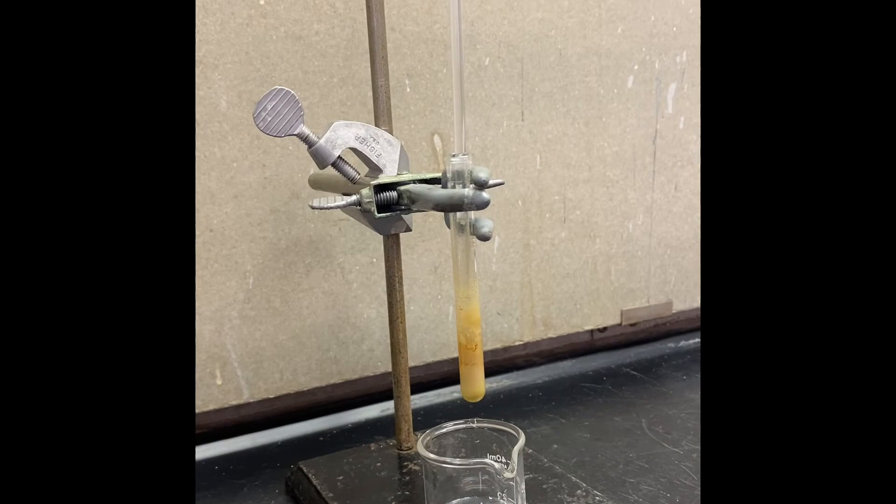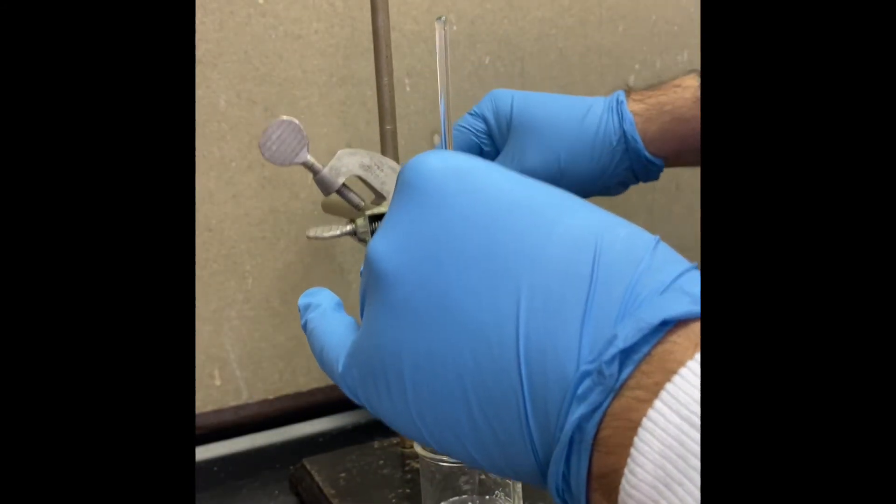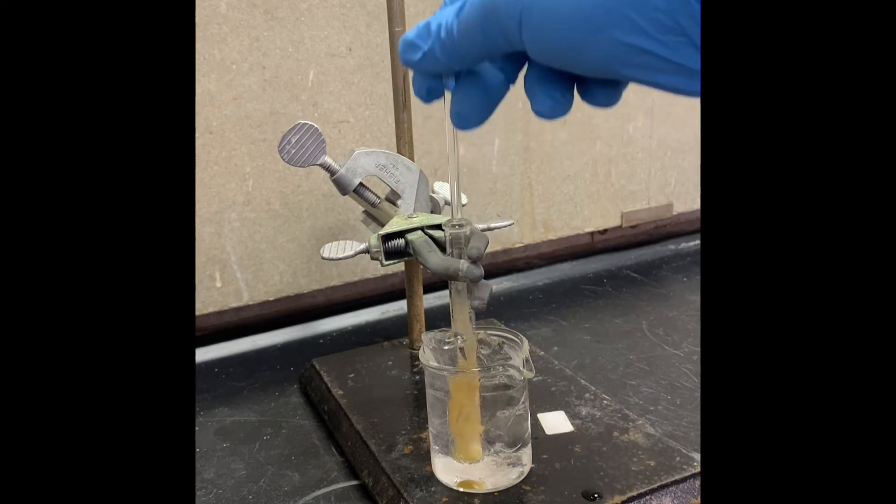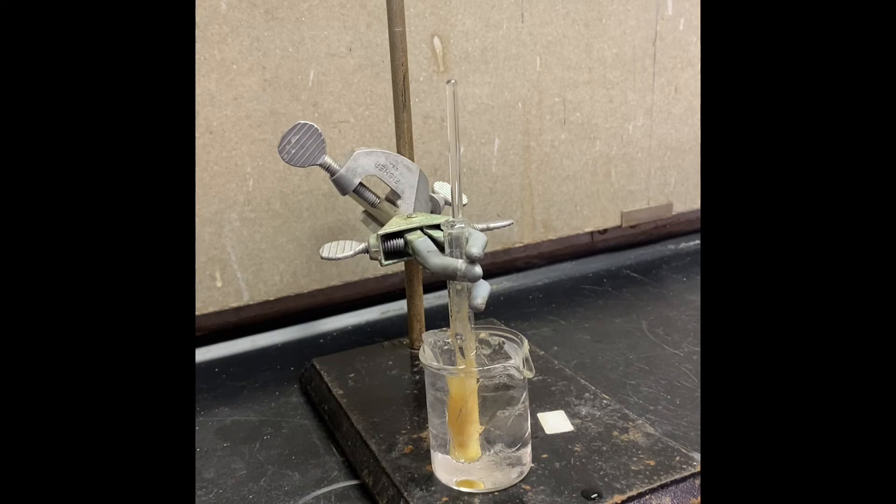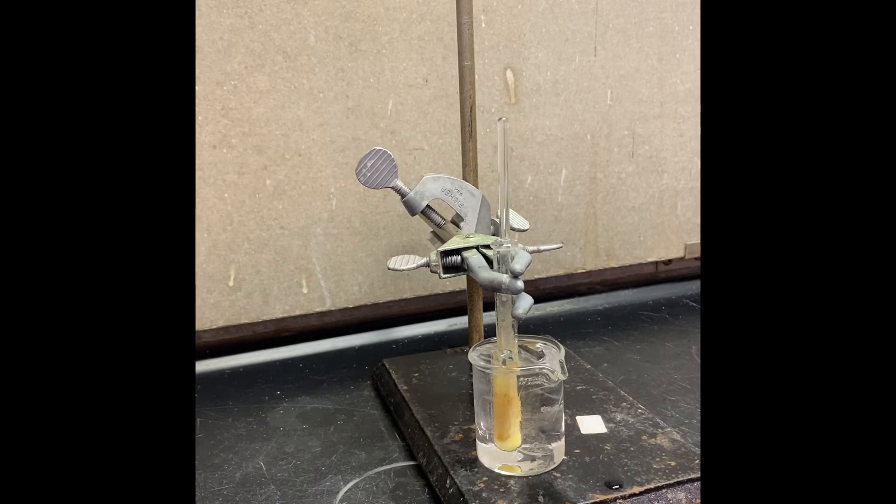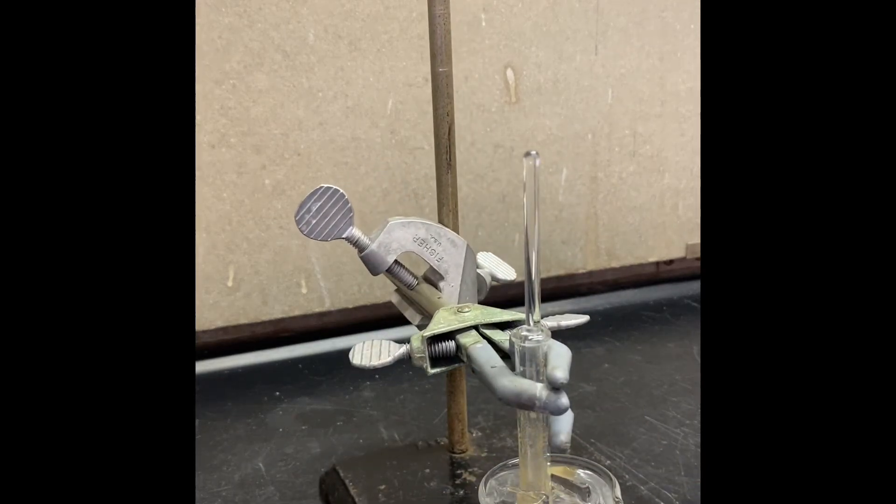We keep our reaction mixture at the room temperature another 10 minutes to complete the reaction and now we're going to put that in an ice bath, cool it down, and we're going to add the water. And once it's cooling up we're going to add two and a half milliliter of water drop by drop. We let it cool down our reaction mixture and now we're going to add the water, drop by drop, two and a half milliliter water.